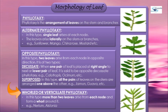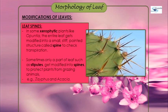Now comes whorled or verticillate phyllotaxy. In this type, more than two leaves arise from each node, and they form a whorl-like structure. It is seen in Nerium and Alstonia. So this covers all three types of phyllotaxy: alternate, opposite (with subtypes decussate and superposed), and whorled or verticillate.